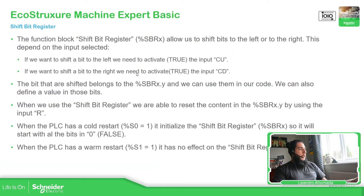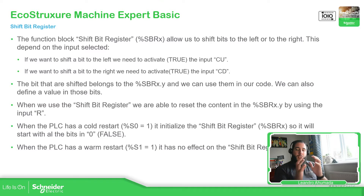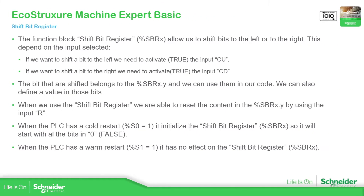Let's start with a small introduction on what this does. Basically you have the function block and based on the word inside this Shift-Bit-Register you can move the bits to the left or to the right. Depending on how you restart the controller — with a cold restart or a warm restart — it affects the bits inside. With a cold restart, using %S0, all the information is lost, and with %S1 as a warm restart, it doesn't affect them.